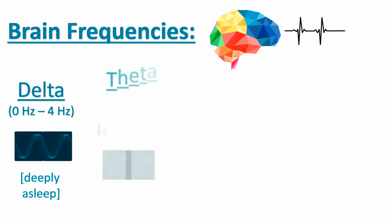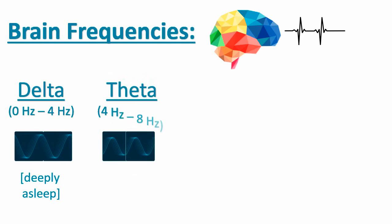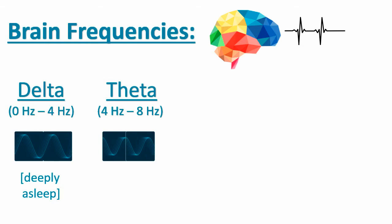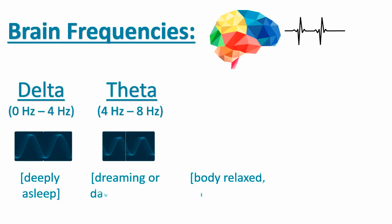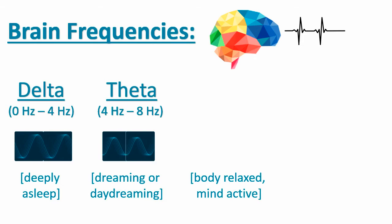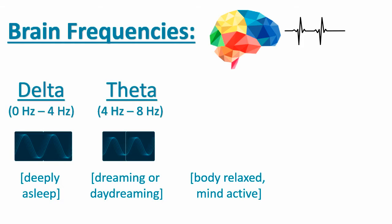Next we have the theta brain state, which ranges from 4 Hz to 8 Hz. In this state, we are either dreaming in our sleep or we are so mentally disengaged from our surroundings that we have started daydreaming. In this state, your imagination explodes and ideas are flowing through your mind waiting to be pondered upon.